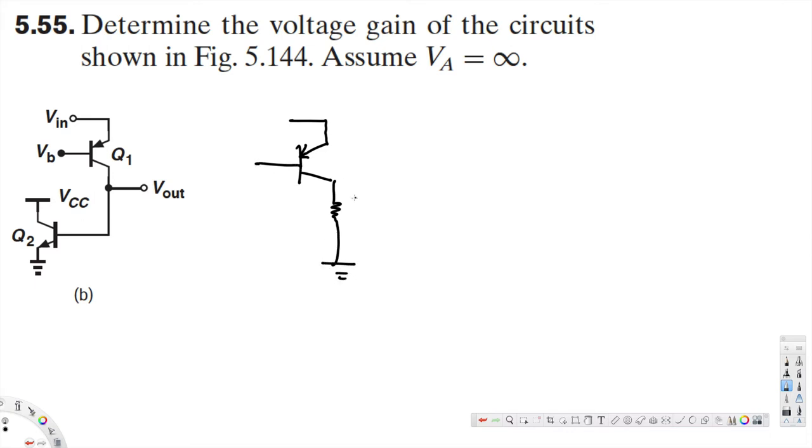Okay, equivalent model. Here we have output voltage and this is r equivalent. And this is vb and here we have vin. Here r equivalent is equal to rφ2 small rφ2.